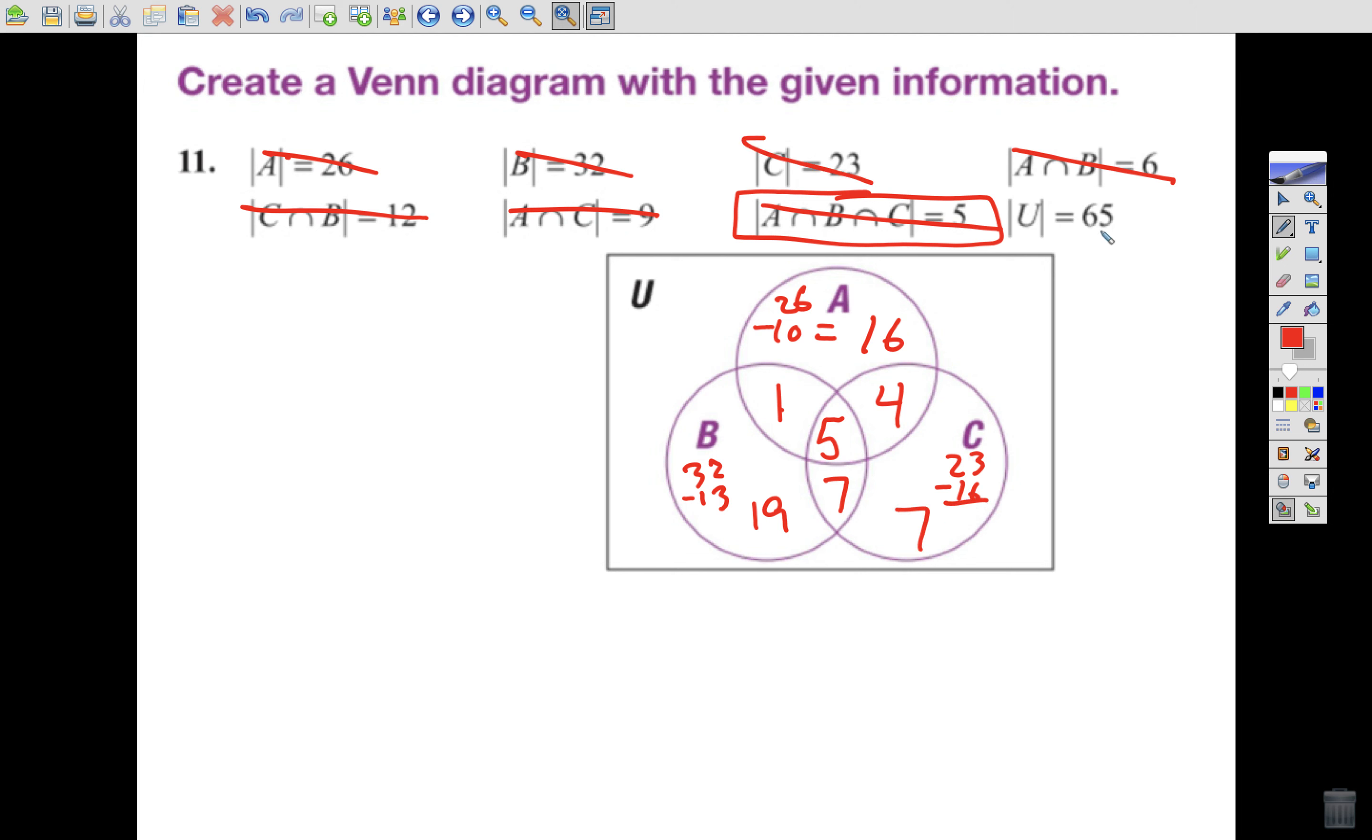And then we get to this last one that says there were 65 total respondents. How many are left that didn't like A, B, or C? Well, I'm going to add up every piece. So I'm going to take this 16, this 4, this 5, this 1, this 19, and this 7. I'm going to add them all up. That's going to give me all of the pieces inside. 16, 20, 25, 26, 45. 52 respondents are accounted for so far. But it says there's 65 that responded. So I'm going to take 65 minus my 52 and get 13 that didn't like any of the 3, okay? That's what you're looking at here.